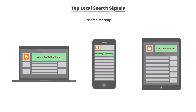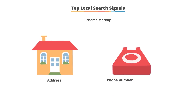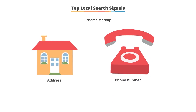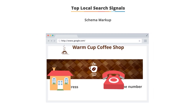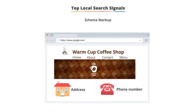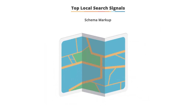What we're most concerned with here is the address and phone number. By using schema, when you add your address or phone number to your website, it enables the visitor to use the click-to-call function on their phone when there's a phone number on the website. In addition, using the address schema can open up a map when someone clicks on it to show the location.